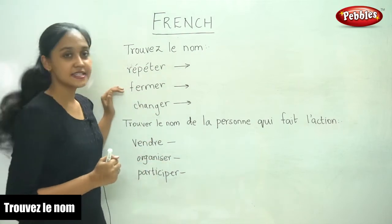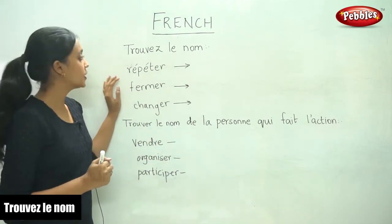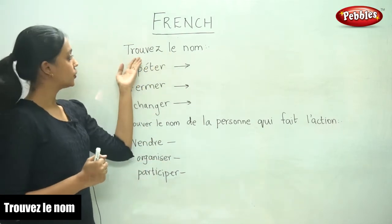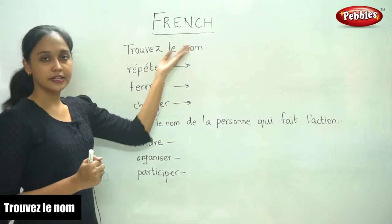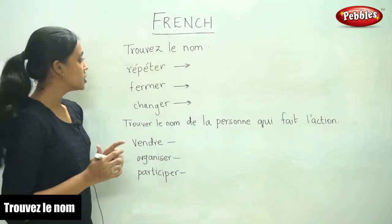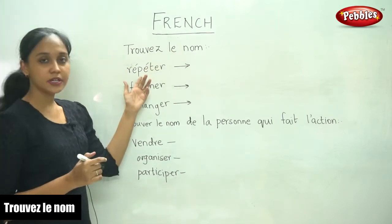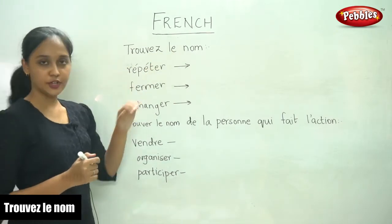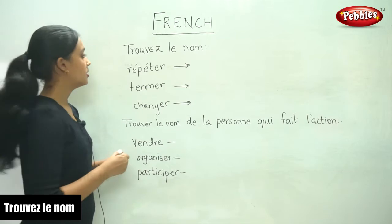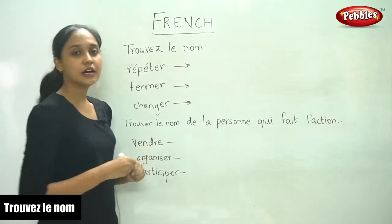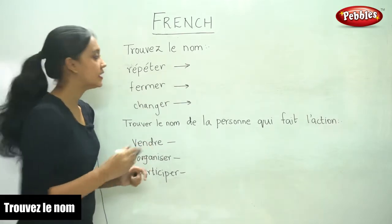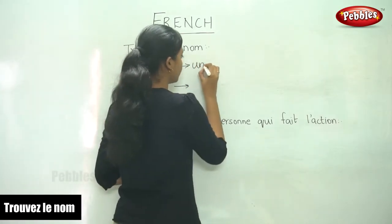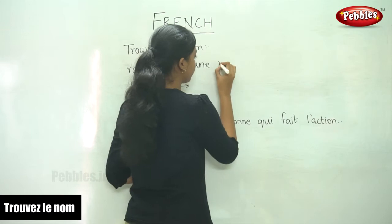In this exercise, we are going to find the noun - trouver le noun. So the first verb given to us is répéter. What is the noun form? It is une répétition.